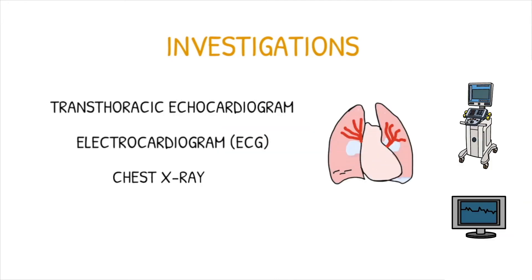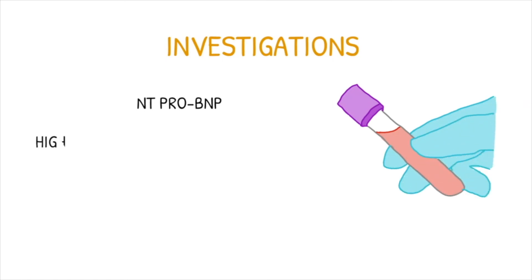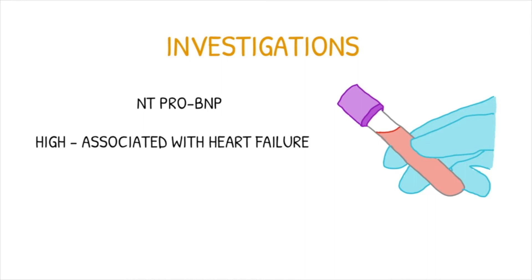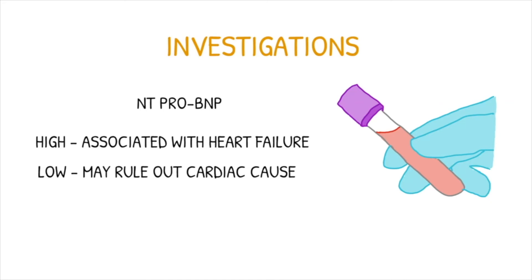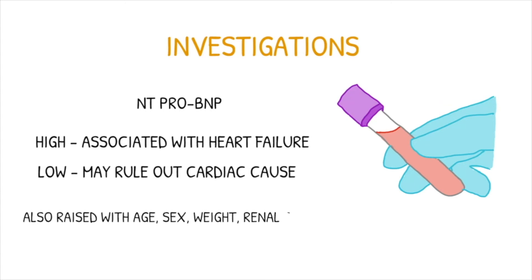A molecule called NT-proBNP, or brain natriuretic peptide, is released during myocardial cell stretching. As a result, a high level of NT-proBNP supports a diagnosis of heart failure. A low result may be used to rule out decompensated heart failure and raise the possibility of a pulmonary cause for the symptoms. An average level suggests a potential non-cardiac cause for the dyspnea such as COPD. Brain natriuretic peptide is also sensitive to other biological factors such as age, sex, weight, and renal function, so elevated levels don't always mean a cardiac cause.